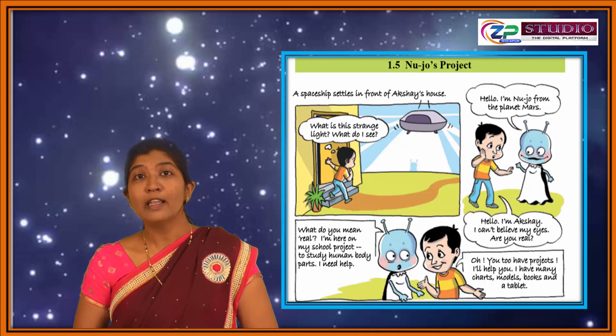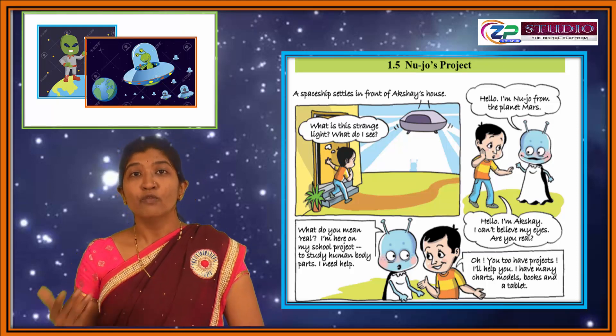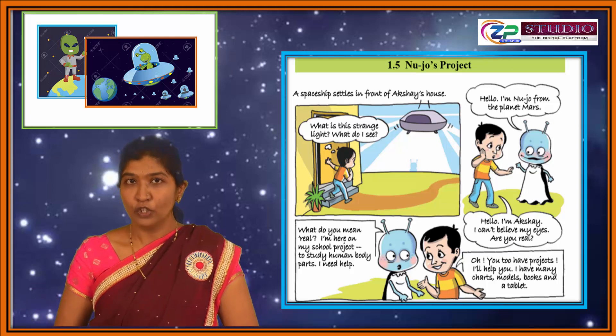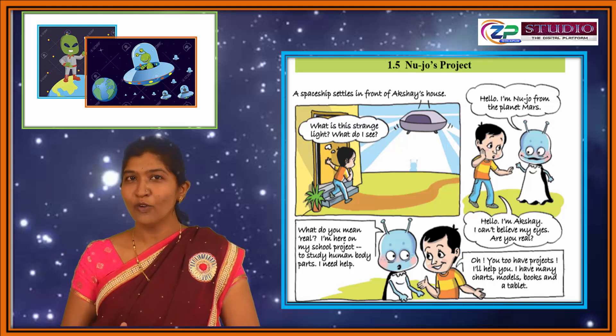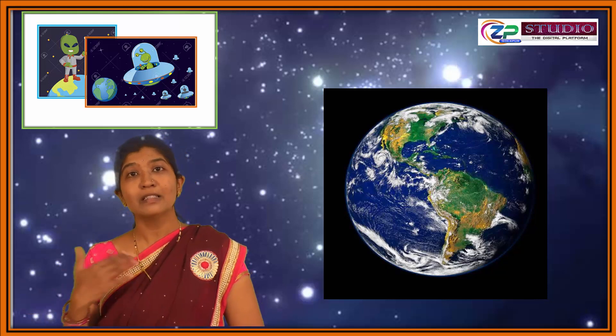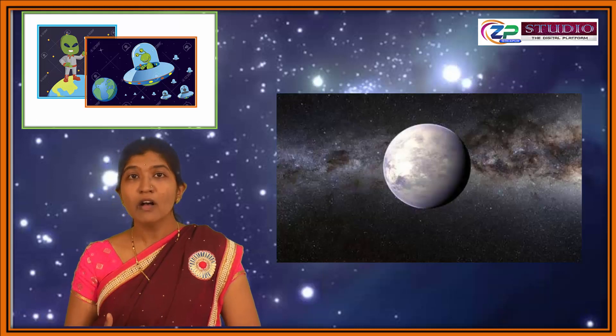Students, do you know what aliens are? Aliens are the organisms which live on the other planets. We know that we are human beings and we live on the Earth. Many of our scientists think that there may be other organisms present on the other planets like us, and we call them aliens.